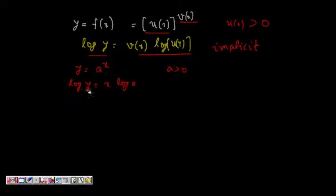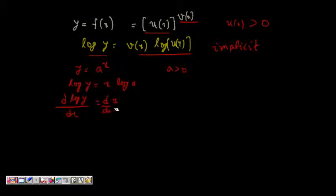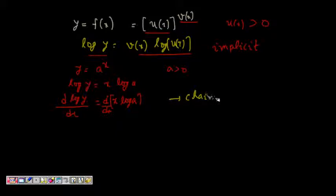Since a is greater than 0, log y equals x log a. Now we differentiate both sides with respect to x. We get d of log y by dx equals d by dx of x log a. Since y is a function of x, this reminds us of the chain rule: d log y by dx equals d log y by dy times dy by dx by the chain rule.